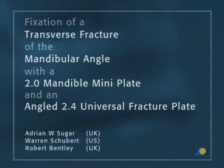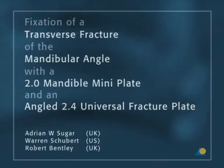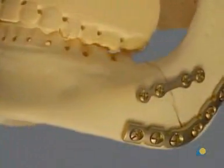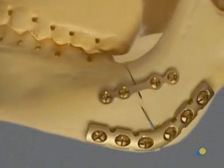A transverse fracture of the mandibular angle will be fixed with a 2.0 mandible mini plate at the upper border and an angled 2.4 universal fracture plate at the lower border.